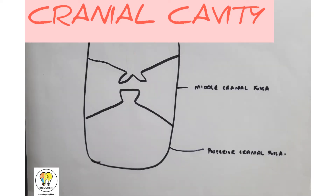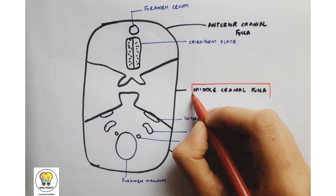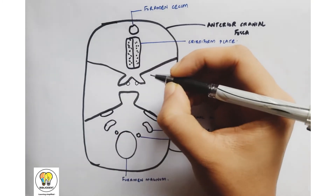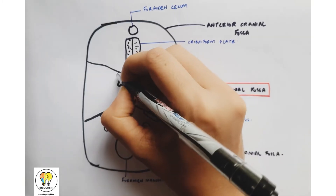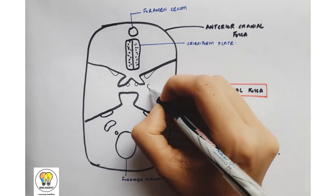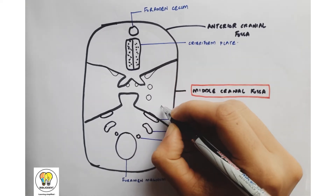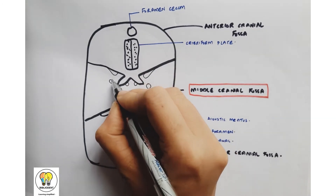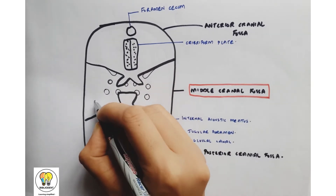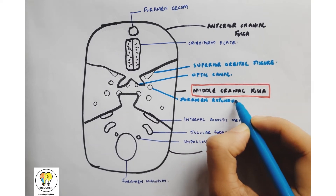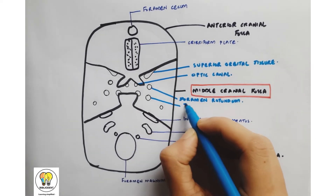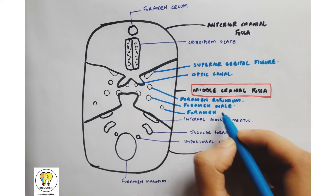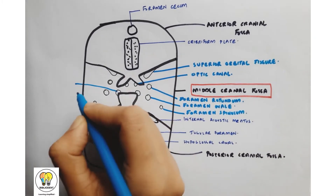Now let's learn the contents in the middle cranial fossa. Here is your optic canal or optic foramen, then this is the superior orbital fissure, then foramen rotundum, foramen ovale, and here is the foramen spinosum, and this one is foramen lacerum. Each foramen of the middle cranial fossa has a partner found exactly on the opposite side of the skull — foramen rotundum, foramen ovale, foramen spinosum, and foramen lacerum.